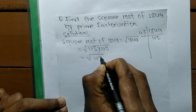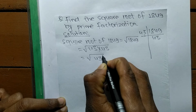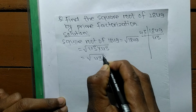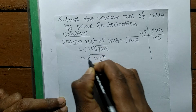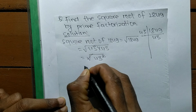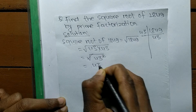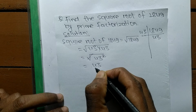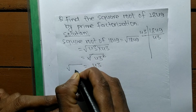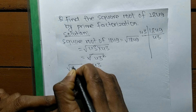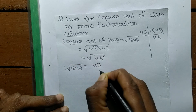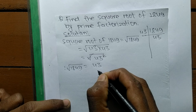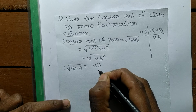43 times 43 means it is 43 squared. A square and square root cancel each other, so 43 comes out of the square root. Therefore, the square root of 1849 is 43.